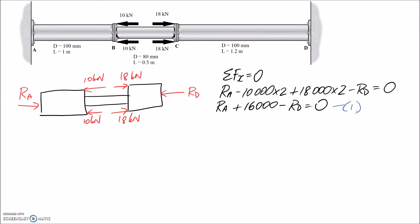I'll call this Equation 1, and now I'm going to work on getting the second equation from the compatibility conditions. Since the walls are fixed and can't move, any change in length of the components must be compensated for by the other sections. So the compatibility condition is: the axial deformation through AB plus the axial deformation through BC plus the axial deformation through CD must equal zero. I'll replace each of these with the PL/AE notation.